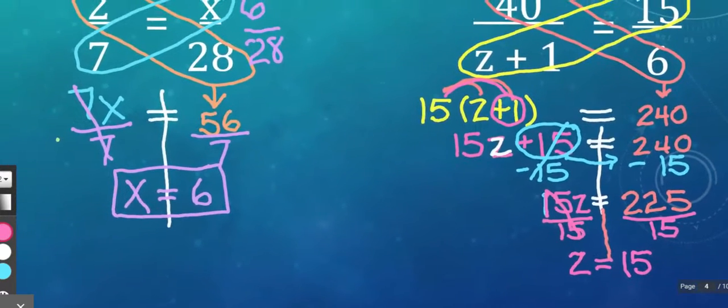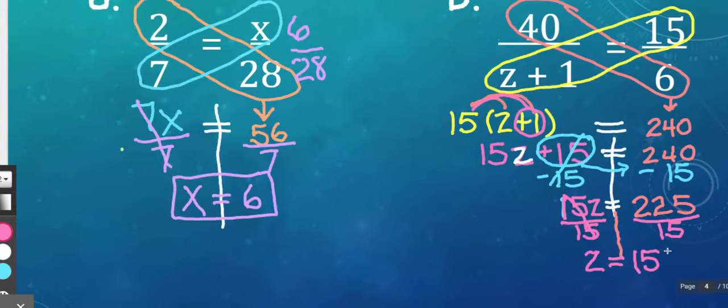So to interpret this, this one's kind of different. That means we would take this 15 back up and put it in here for Z. So technically 15 plus one, that's 16. So it's saying 40 over 16 is equal to 15 over six.